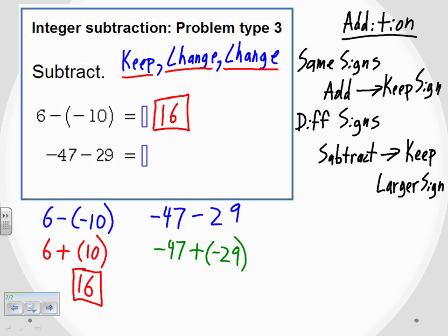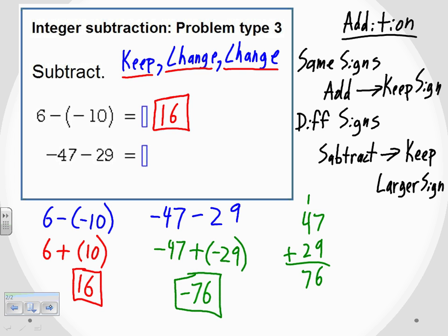So negative 47 plus negative 29. Going back to the addition rules: when the signs are the same, add the digits and keep the sign. Forgetting the negatives, I'm dealing with 47 and 29. Adding those: 7 plus 9 gives 16 in the first column, carry the 1, giving 7 in the second column — so 76. But I keep the sign: I started with two negatives, so the answer is negative 76. So negative 47 minus 29 equals negative 76.